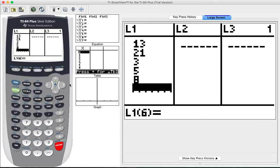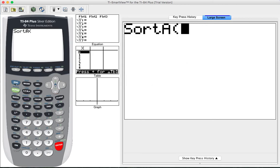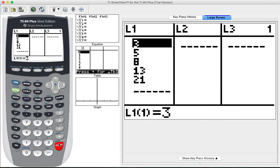Once the data is in a list, you can sort it in ascending order. This helps to identify the range. To sort it, press STAT, sort A for sort ascending, and then identify the list that has the data. Mine is in L1 using the second key and the number one to identify L1. Close the parentheses, hit enter, and now it's sorted.